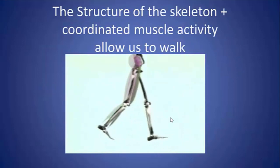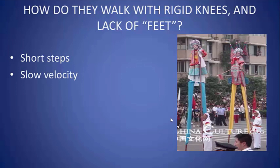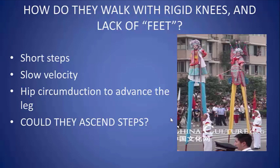The structure of the skeleton and this coordinated muscle activity allow us to walk. How do people walk with rigid knees and lack of feet? They have to use a number of compensations — they must take short steps, walk at a fairly slow velocity, and circumduct the hip to advance the leg. They probably cannot ascend or descend steps, because they can't move their pelvis enough and circumduct enough, unless perhaps they're very small steps.